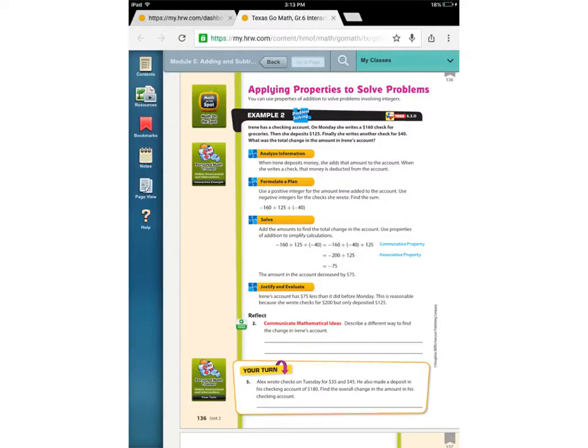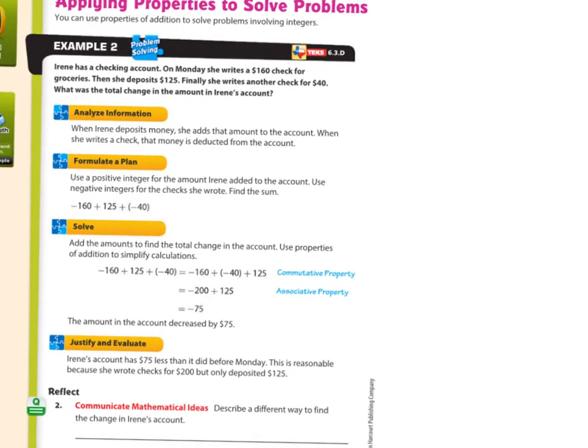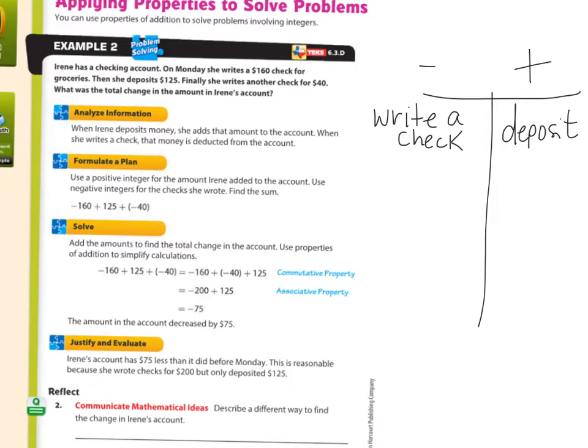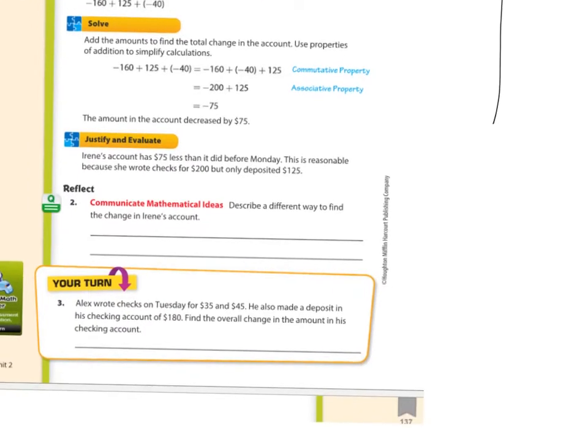Keep this same chart. We're going to keep going. Irene has a checking account. On Monday, she writes a check for groceries. So writing a check is a negative. That's going to take money out of your account. Write a check. That's the same thing as spending money. And then she gets a deposit. That means you're adding money to your account. That's the same kind of question. All right, let's go.